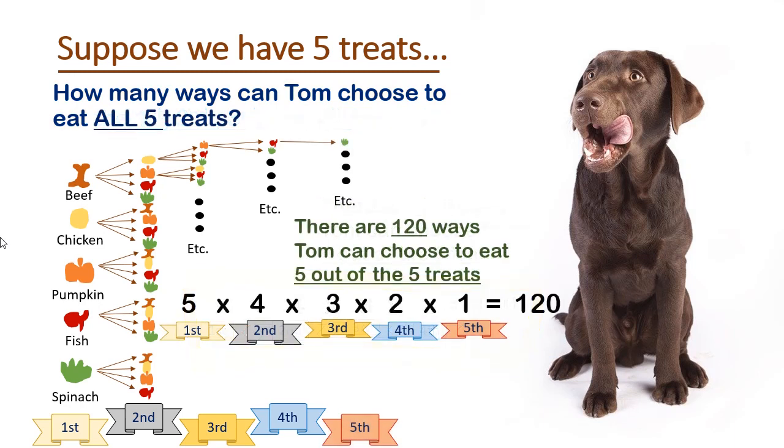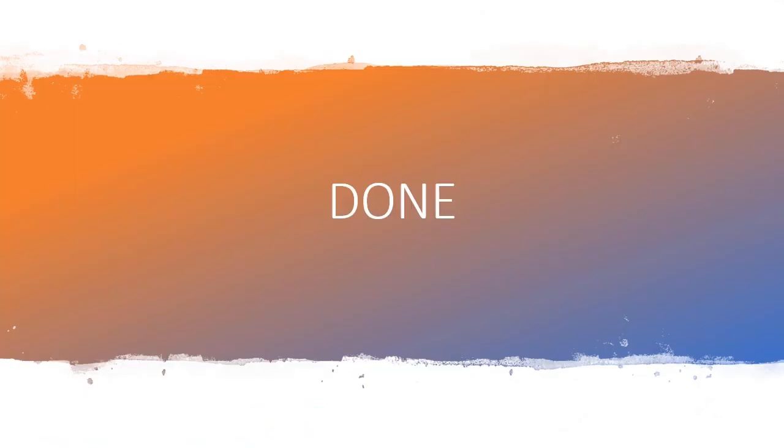Lastly, if Tom gets to eat five out of five treats, there isn't much of a choice on the last treat, since there's only one left over. So again, five times four times three times two times one is 120. There are 120 ways Tom could choose to eat five out of the five treats. All done. Ha ha ha. Not really.